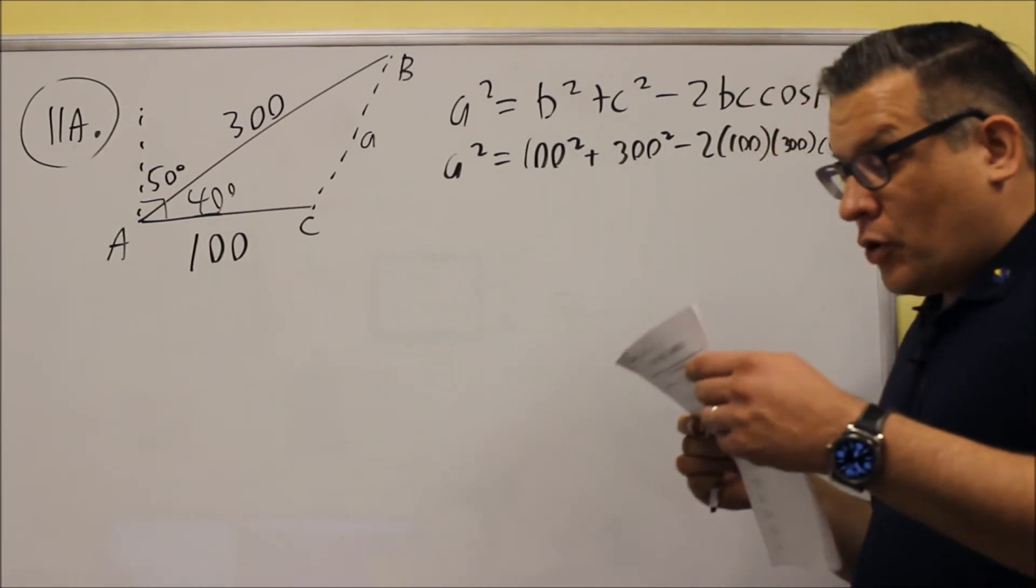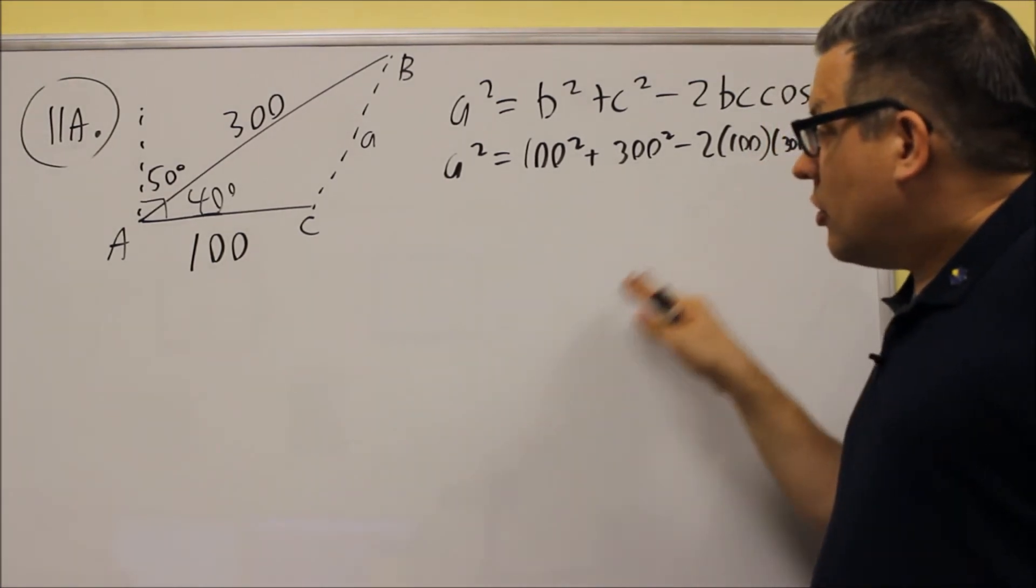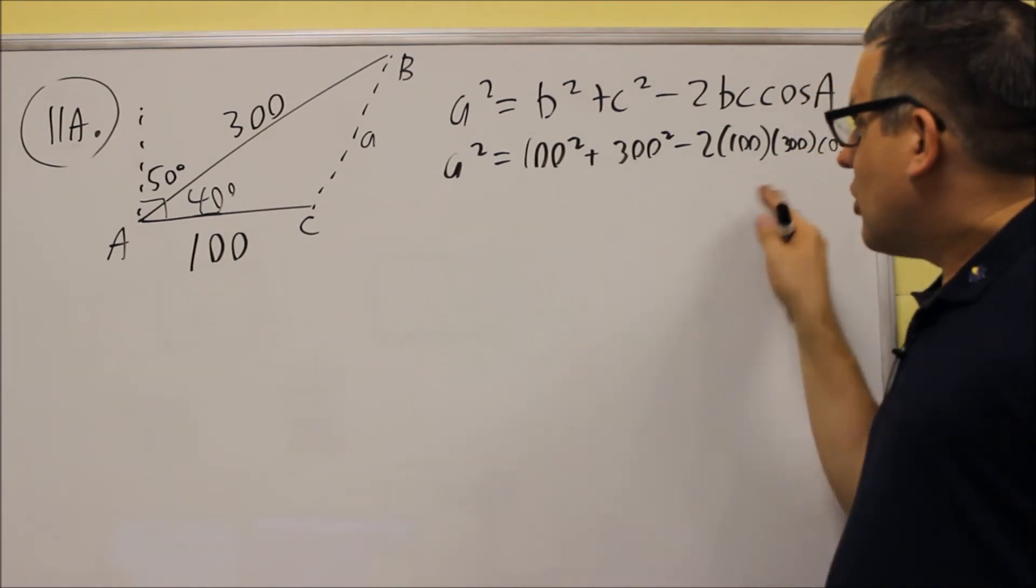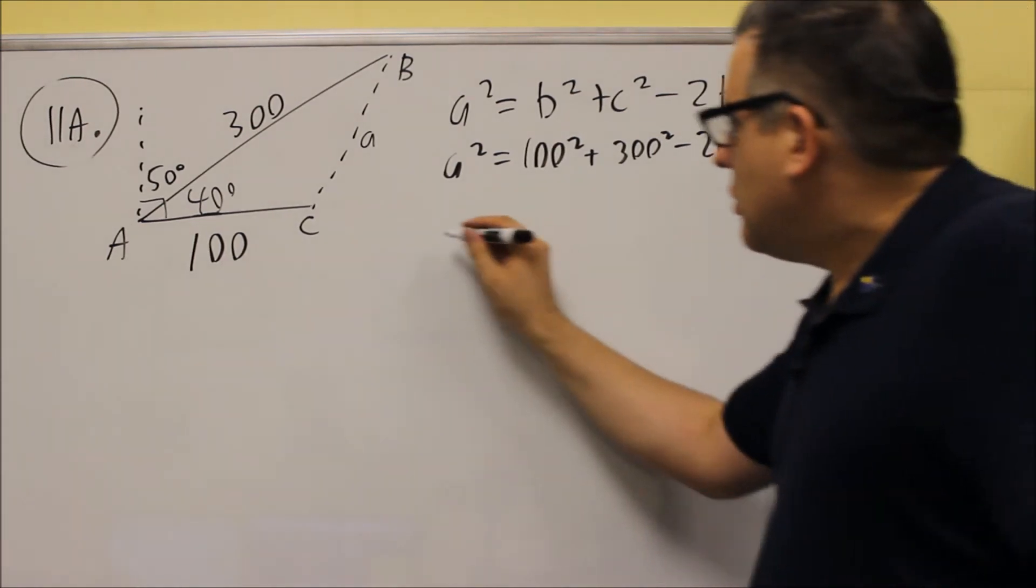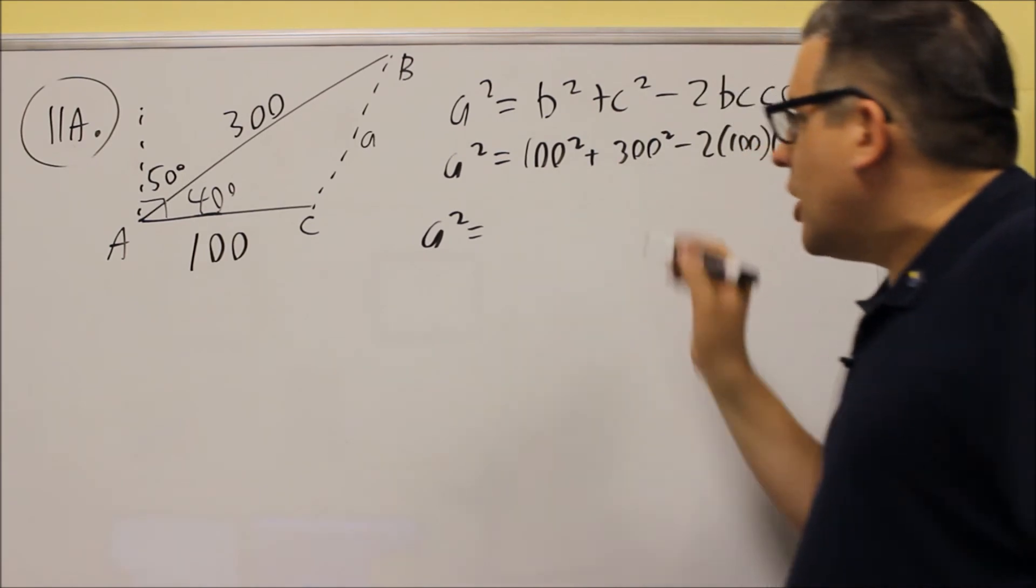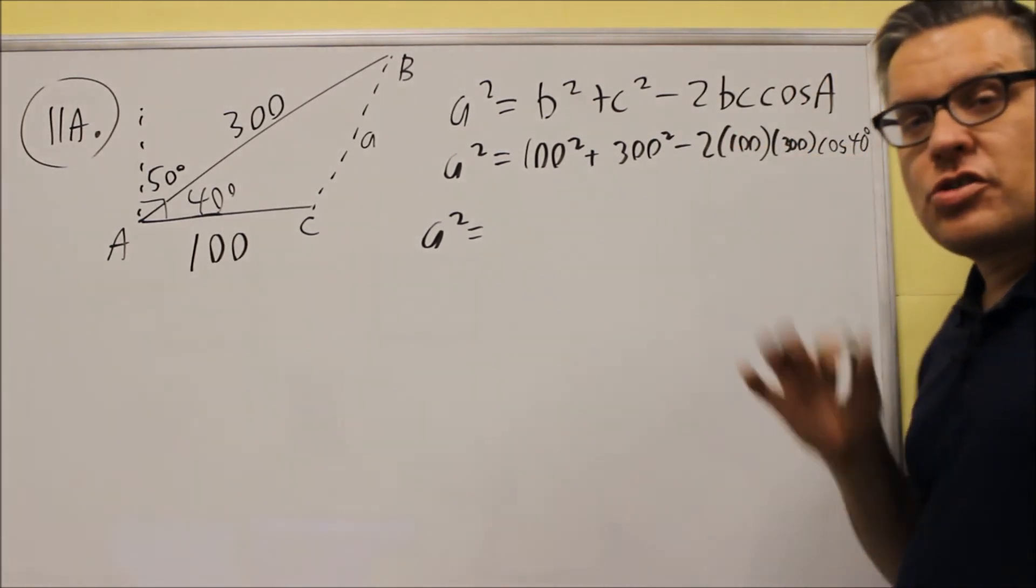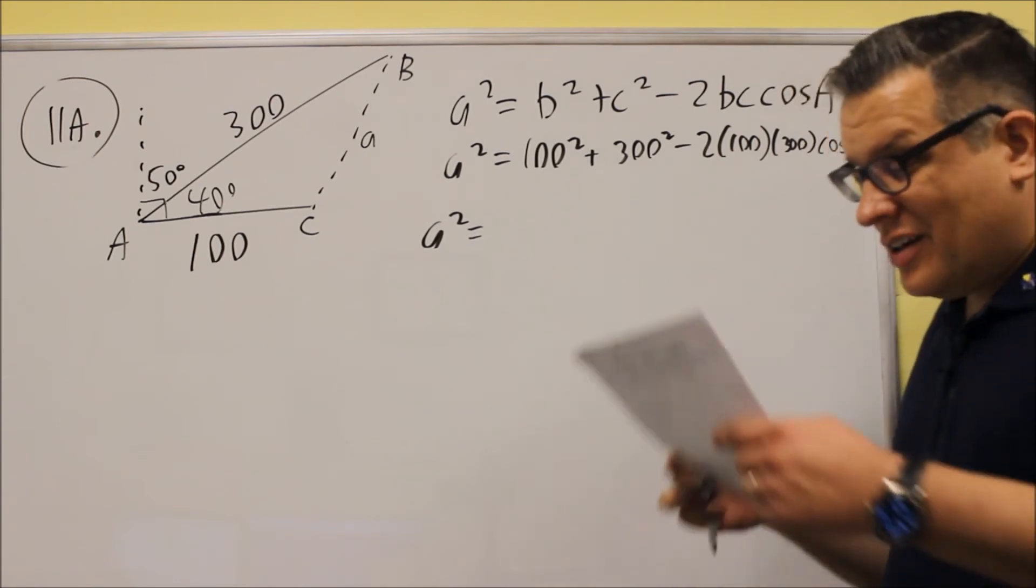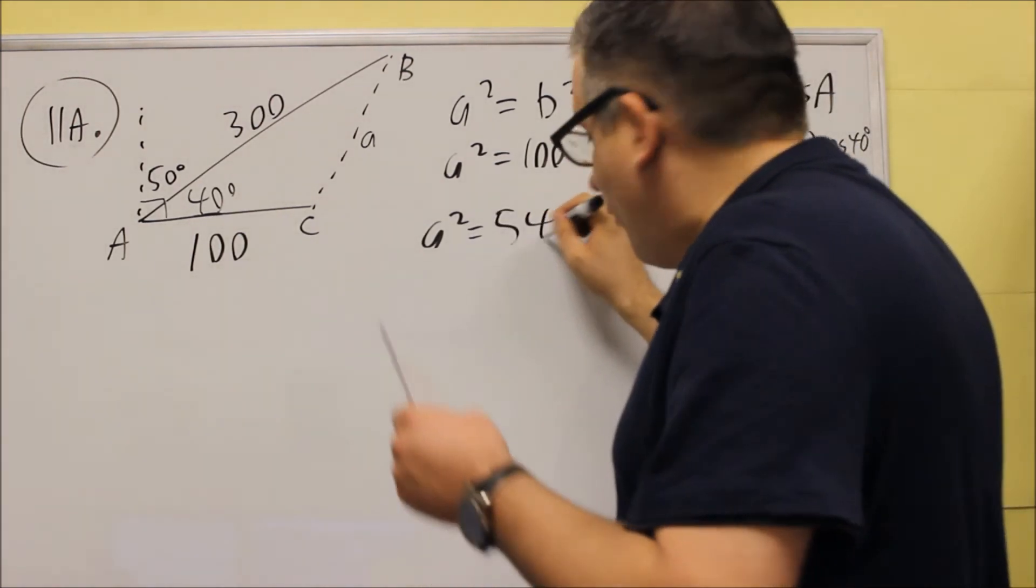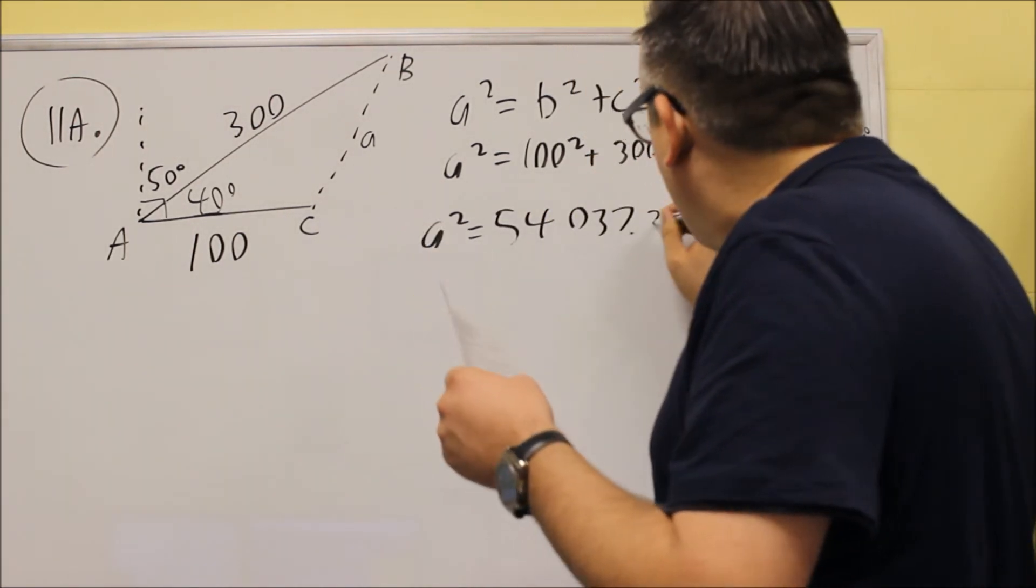Now it's just a matter of putting all this into your calculator. So most calculators, you should be able to just type this all out at once, and so here's what you should get. So if you put 100 squared plus 300 squared, put all this in. Make sure your calculator is in degree mode. Then you should get this, 54037.33, some more decimals.